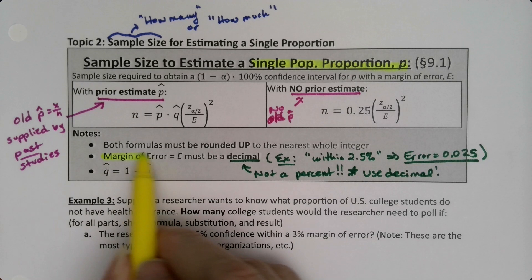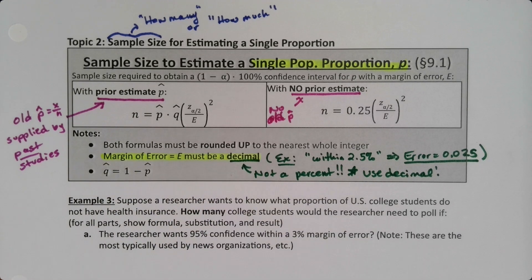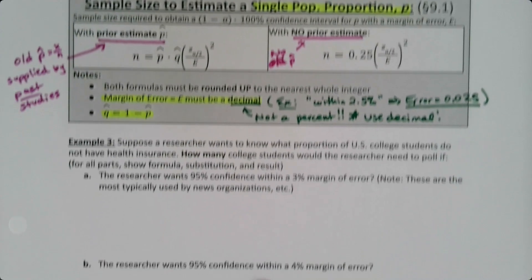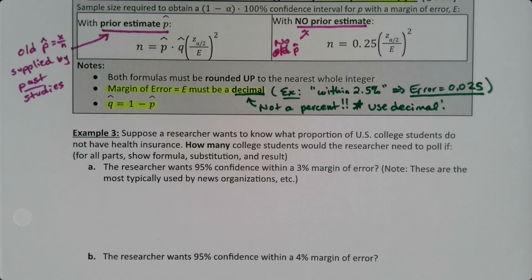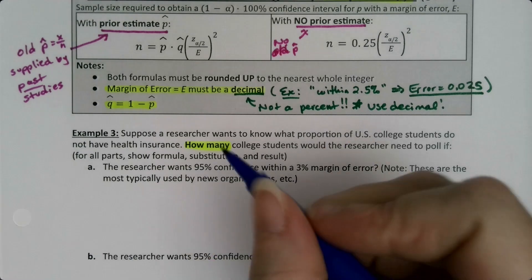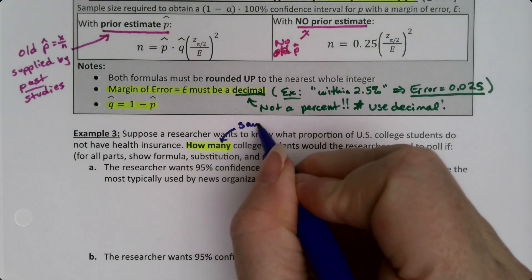Also, q-hat is one minus p-hat — we already learned that in chapter six, and it's come back in this chapter. Let's look at an example. Suppose a researcher wants to know what proportion of U.S. college students do not have health insurance. How many college students would the researcher need to poll? Notice the question word 'how many' — that's a giant red flag that this is a sample size question.